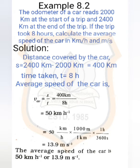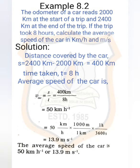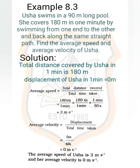The average speed of the car is v = s / t = 400 kilometers / 8 hours = 50 kilometers per hour. Now converting to meters per second: 50 km/h × 1000 m / 3600 s = 13.9 meters per second. Next, example 8.3: Usha swims in a 90-meter long pool. She covers 180 meters in one minute by swimming from one end to the other and back along the same straight path. Find the average speed and average velocity of Usha.